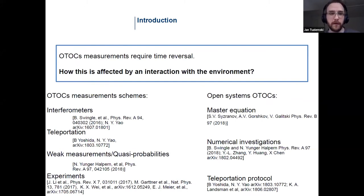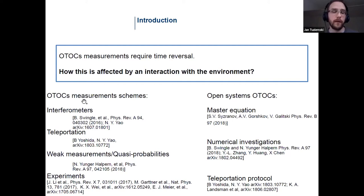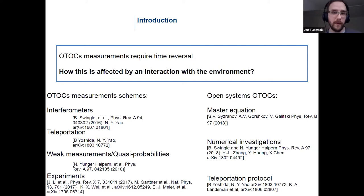This was a schematic overview, but people are really interested in measuring OTOCs in different systems. They have come up with a number of schemes aiming at measuring out-of-time-ordered correlation functions, and the first experimental results have been reported. All those protocols typically use this backward time evolution — when you try to measure OTOCs, you somehow need to reverse the evolution of your system.